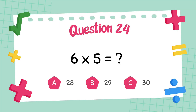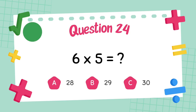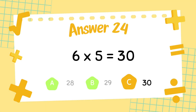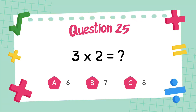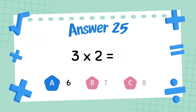What is 6 multiply 5? The answer is 5. The answer is 30. What is 3 multiply 5? The answer is 6.